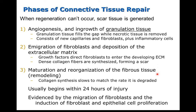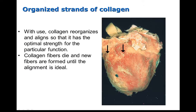Then the scar will go through a process of remodeling. In this phase, there will be maturation and reorganization of the fibrous tissue. As the scar matures, vascular degeneration turns this highly vascularized red granulation tissue into a very pale and largely avascular scar. Collagen synthesis is important to the strength of the newly healed wound, and collagen continues to reorganize and align until it reaches its optimum strength — as shown in this example of a myocardial infarction with scar tissue formation.